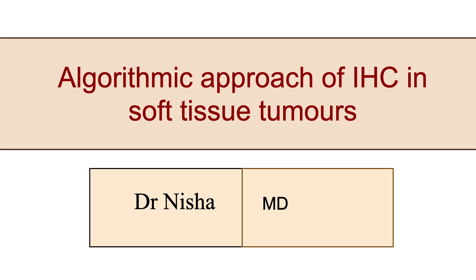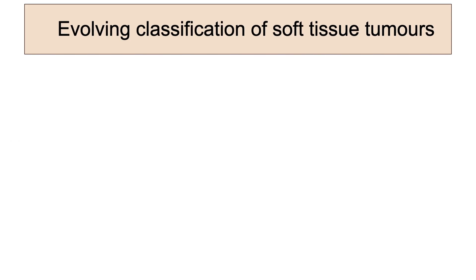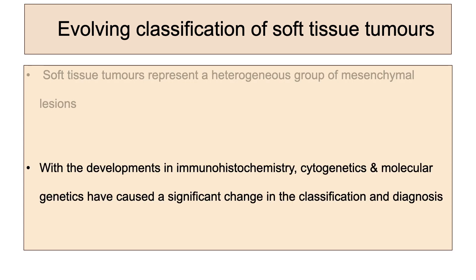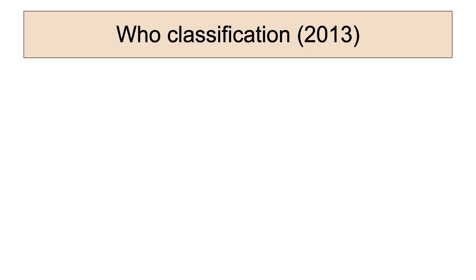Welcome everyone. Today we will discuss the algorithmic approach of immunohistochemistry in soft tissue tumors. Classification of soft tissue tumors is evolving day by day, and soft tissue tumors represent a heterogeneous group of mesenchymal lesions. With developments in immunohistochemistry, cytogenetics, and molecular genetics, there have been significant changes in the classification and diagnosis of soft tissue tumors.